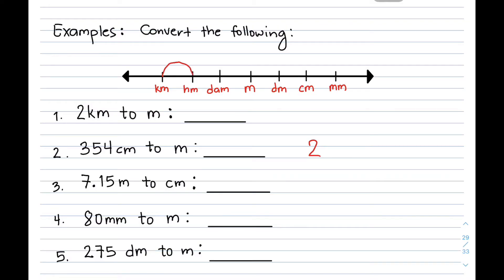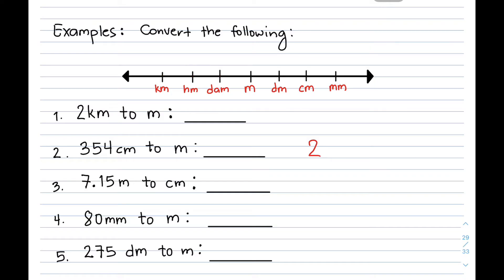Starting from kilometer, we count how many units we travel to reach meter: 1, 2, and 3. The direction is from left to right — 3 units. We move the decimal point 3 places to the right, filling the spaces with zeros. Therefore, we have 2,000 meters in 2 kilometers.